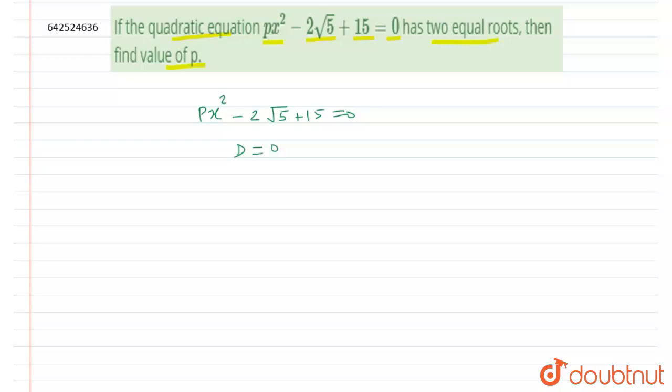Now what will be the value of D? We know that D equals to b² - 4ac. So here b will be this part, a is this one, and c will be this one.